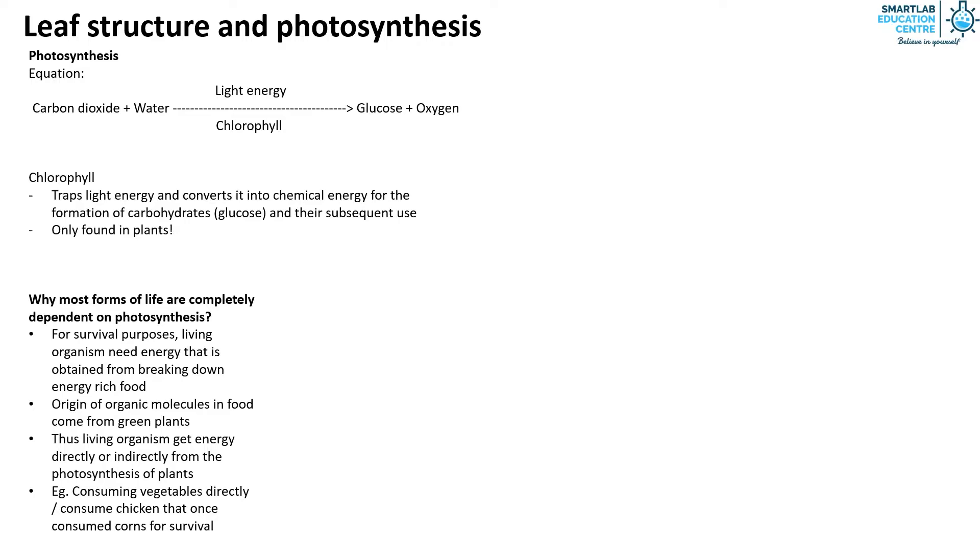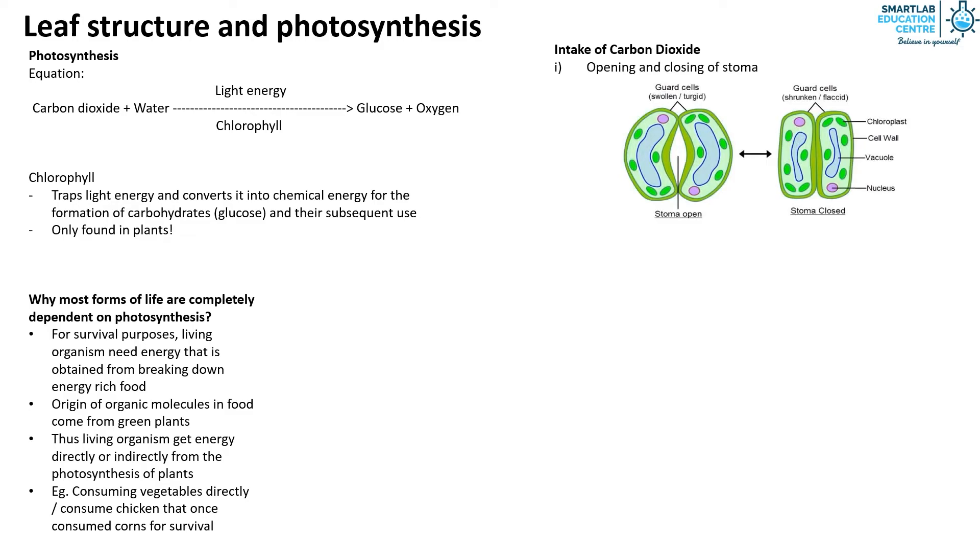Now that we know how photosynthesis works we shall now study how the plant obtains the raw materials needed for photosynthesis and what happens once the products are made. First, we will look at how plants take in carbon dioxide. Earlier we looked at how the structure of the leaf and we know that the opening and closing of the stomata regulates the diffusion of gases in and out of the leaf. So what determines if the stomata opens and closes?